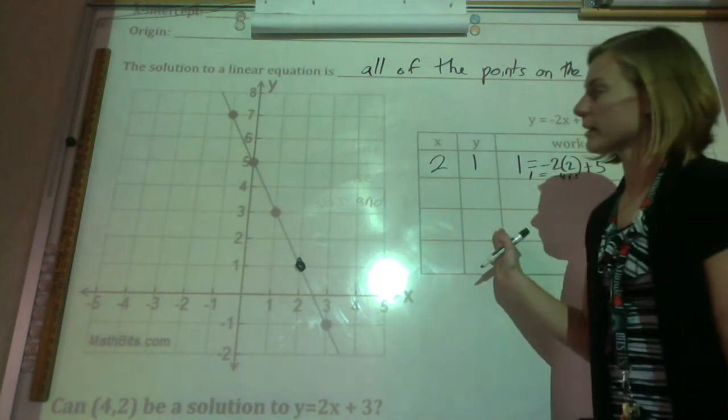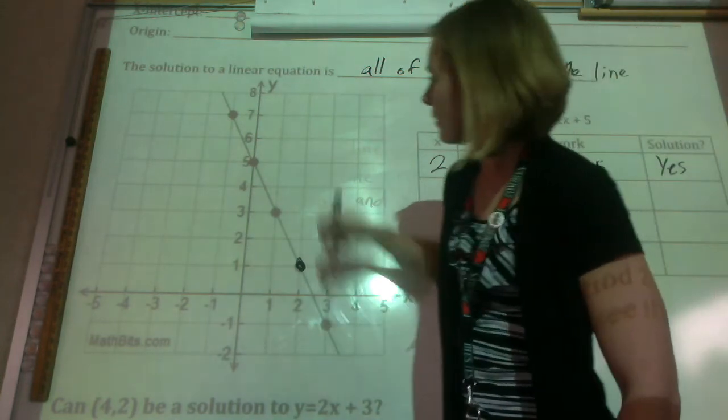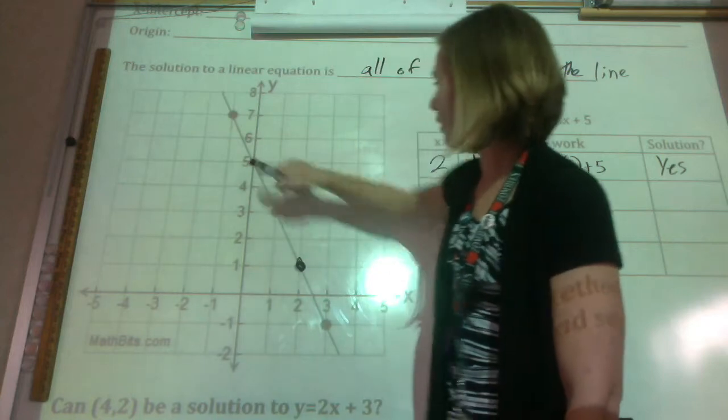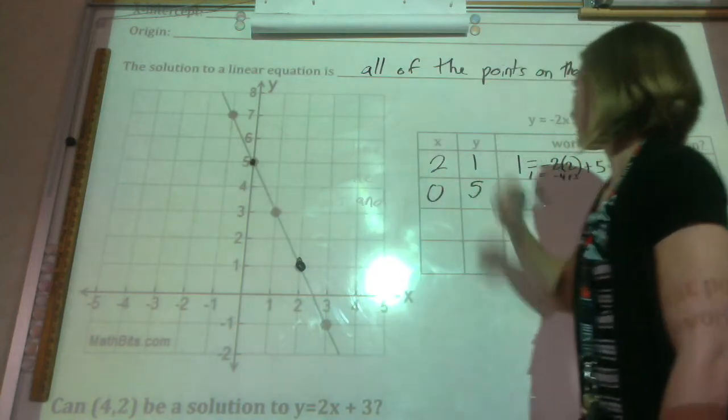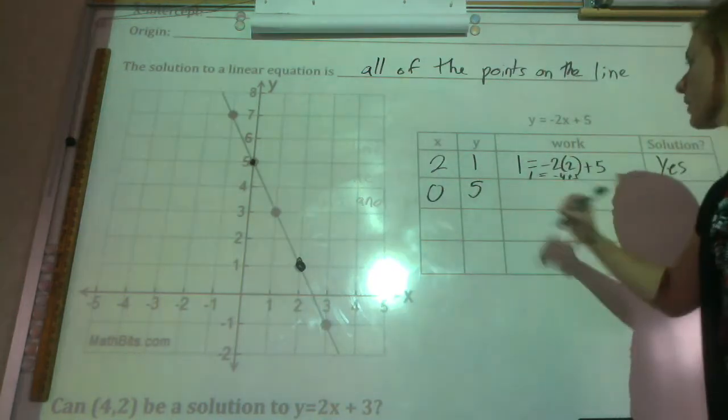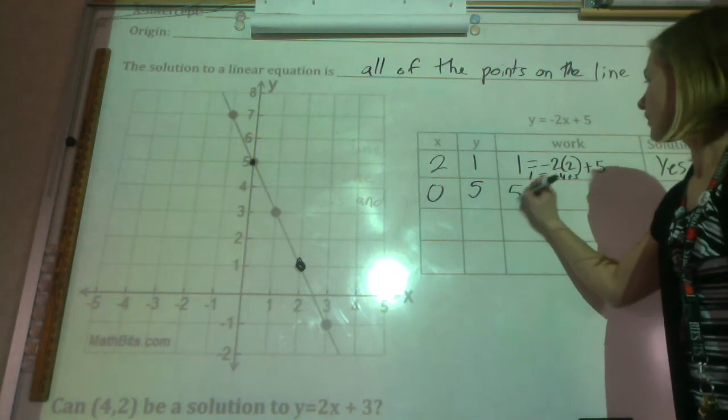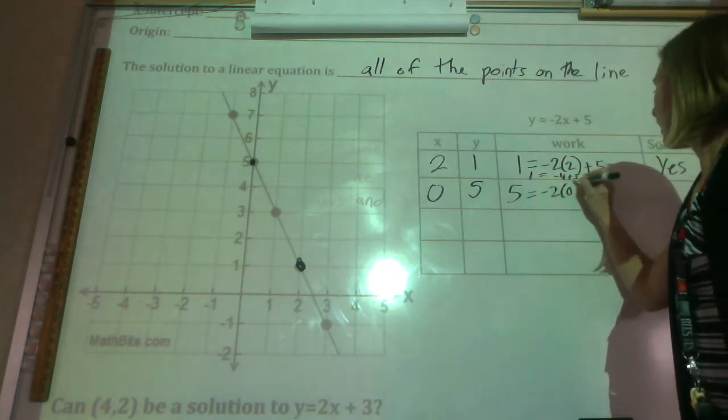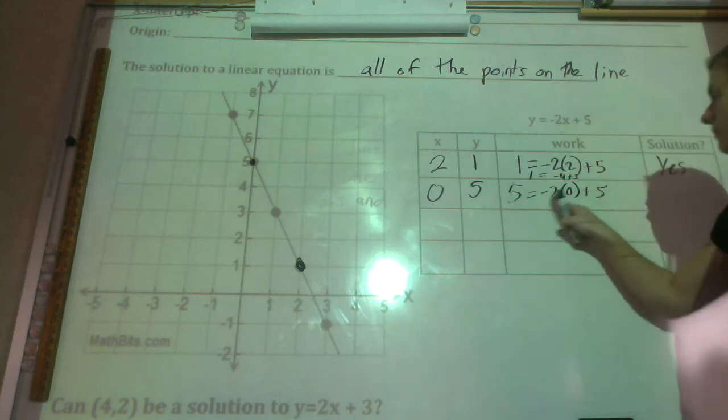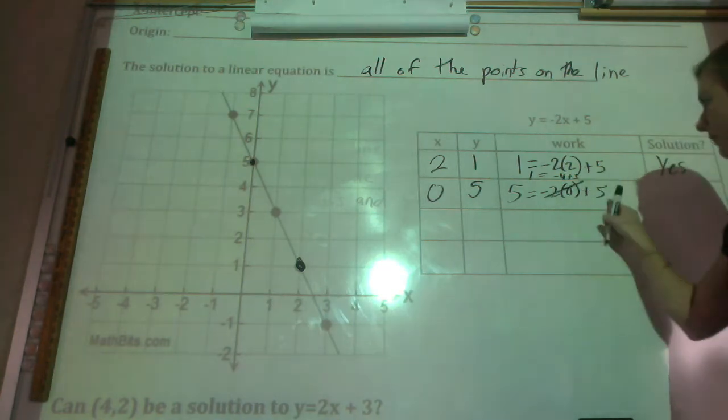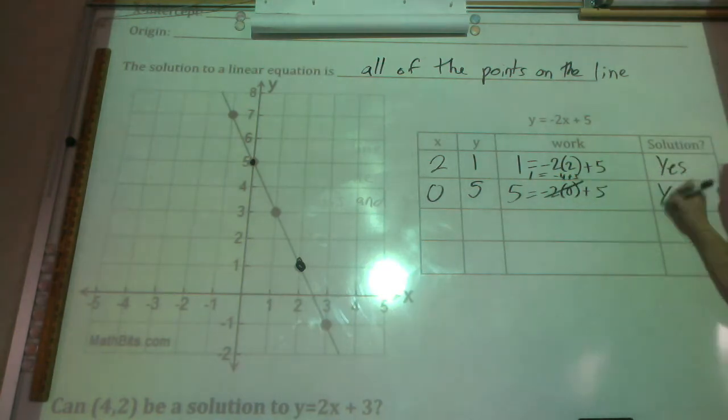Let's try another point. Maybe this one right here, (0,5). Let's throw it in and see if it works. 5 goes in for y, 0 goes in for x. Well, 0 times negative 2, that goes away. 5 equals 5. Yes, that's a solution.